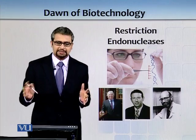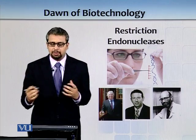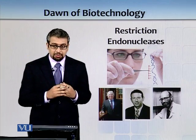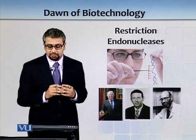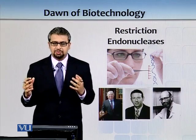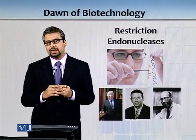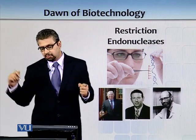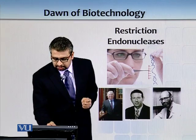Three scientists — Herbert Boyer, Stanley Norman Cohn, and Paul Berg — found restriction endonucleases and kick-started the biotech revolution. Restriction endonucleases basically cut DNA, and if you can cut DNA, you can pick a gene of your choice and insert it.